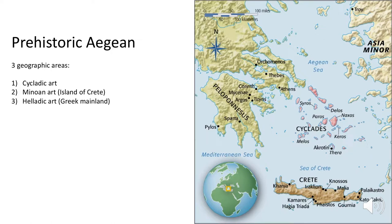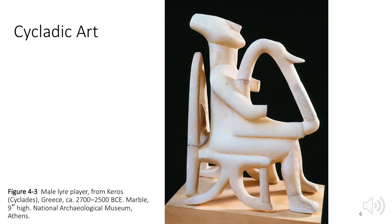Art of the prehistoric Aegean can be broken down into three geographic areas: Cycladic art is from the Cycladic islands, Minoan art is from the island of Crete, and Helladic art from the Greek mainland. Marble was abundant in the Cycladic islands. The male harp player is an example of Cycladic art — it is carved from marble and is made from simple geometric shapes and large, flat planes.